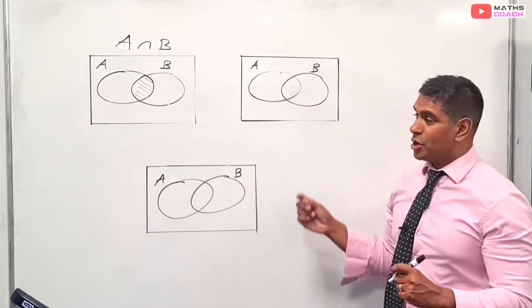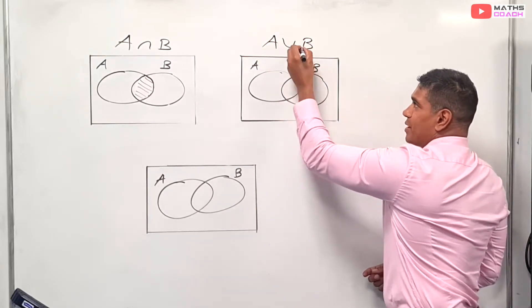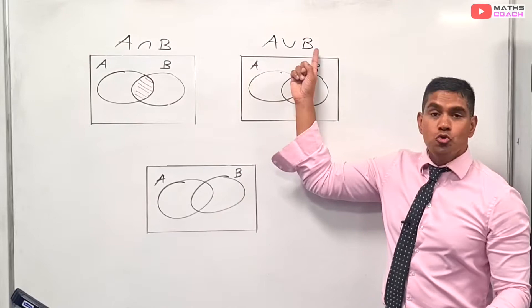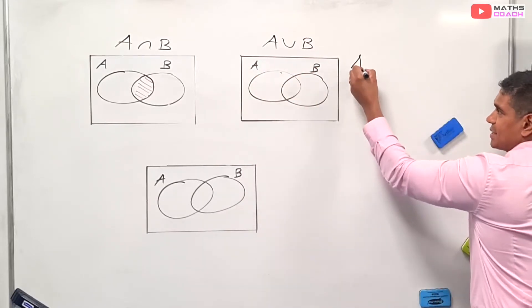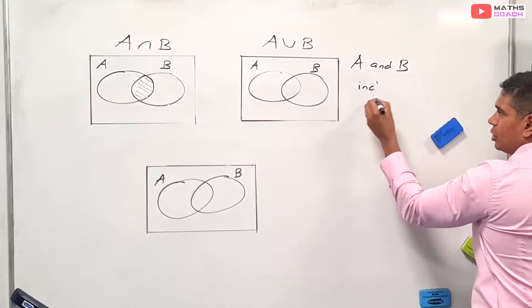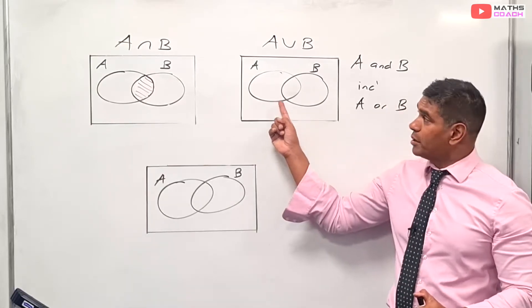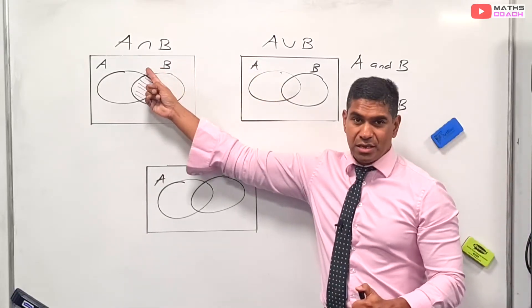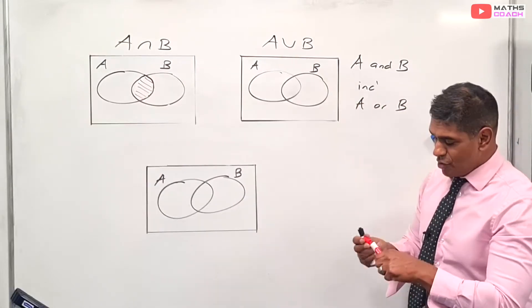So when we go to our next notation, which is slightly harder, we pronounce that A∪B, or A union B. And what that means, it's A and B, however, includes A or B. And most students find this one more tricky than this. I'm going to give you a little trick on how to deal with A∪B.